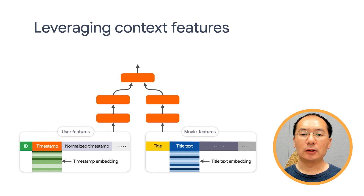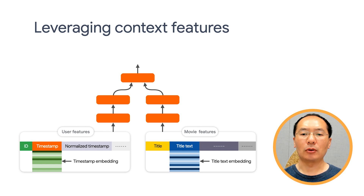For example, day of the week may be an important feature when deciding whether to recommend a short clip or a movie. Users may only have time to watch short content during the week, but can relax and enjoy a full-length movie during the weekend. Similarly, query timestamps may play an important role in modeling popularity dynamics — one movie may be highly popular around the time of its release, but decay quickly afterwards.